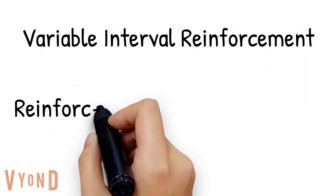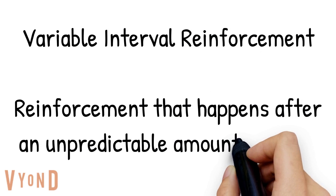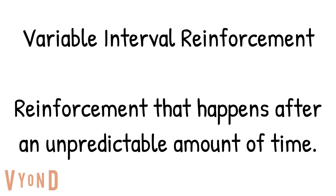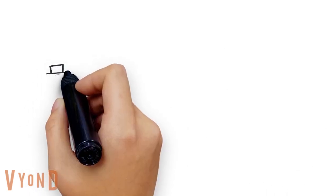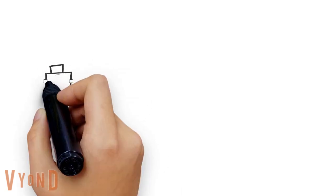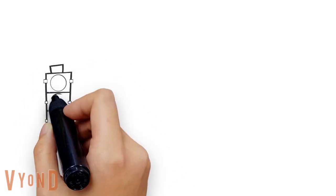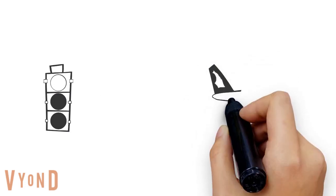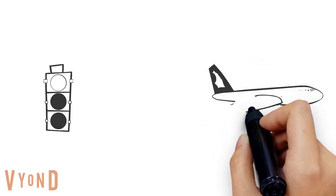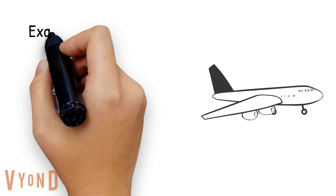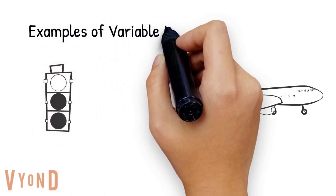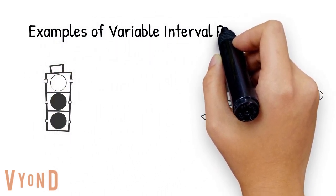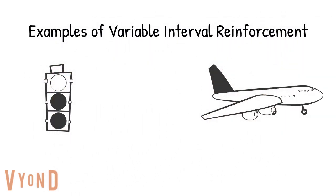Variable interval reinforcement is when reinforcement happens over an unpredictable amount of time. An example is a traffic light — sometimes it turns green right away and other times you have to wait a couple of minutes. Another example is going through airport security: sometimes you can go through it really fast and other times it takes a really long time.